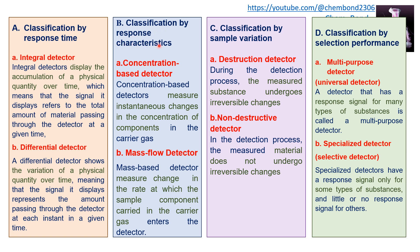Classification by response characteristic gives two categories: concentration-based detector and mass flow detector. A concentration-based detector measures instantaneous changes in the concentration of the component in the carrier gas, meaning the signal is related to the concentration of the solute. A mass flow detector measures the change in the rate at which the solute component is carried by the carrier gas, so the signal is related to the rate at which solute material enters the detector.